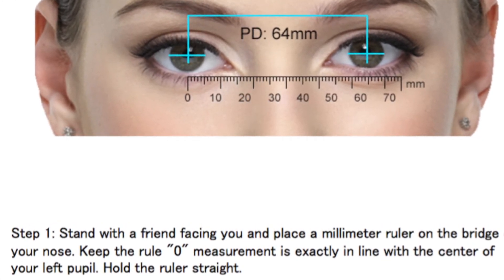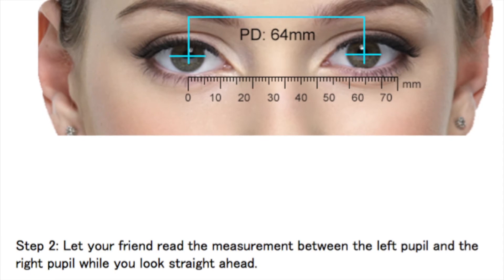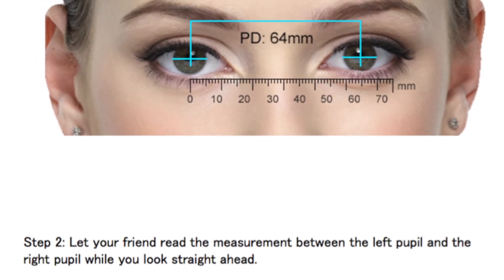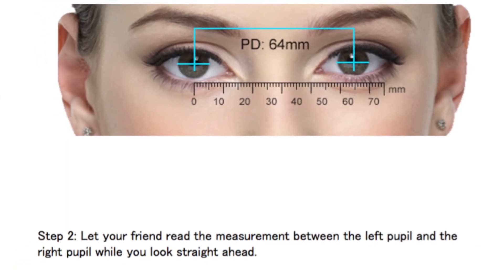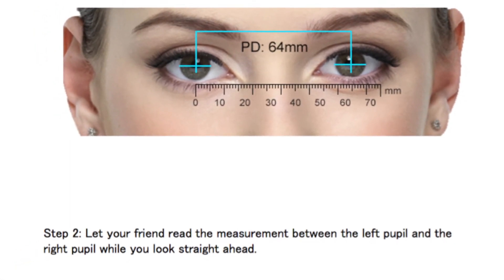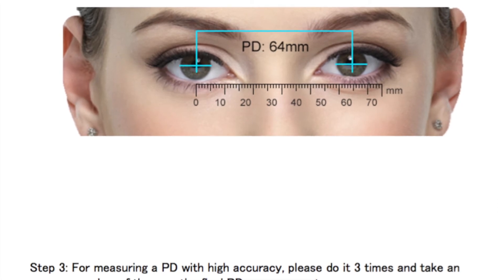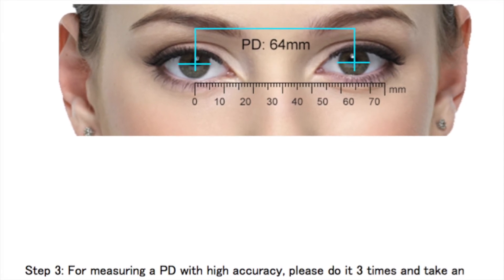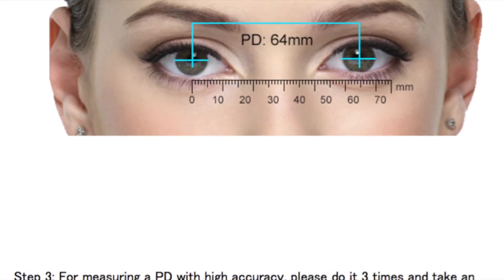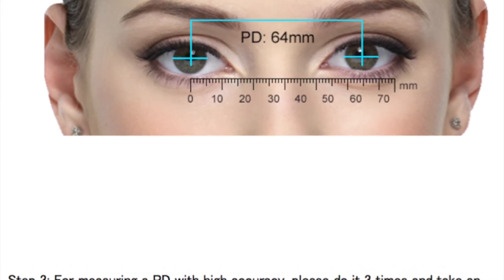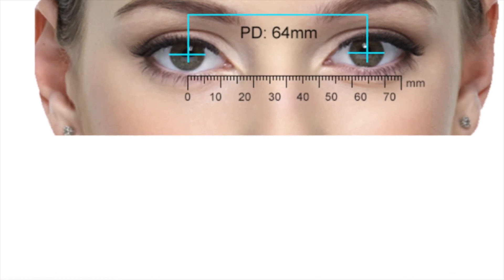Hold the ruler straight. Step 2: Let your friend read the measurement between the left pupil and the right pupil while you look straight ahead. Step 3: For measuring a PD with high accuracy, please do it three times and take an average of them as the final PD measurement.